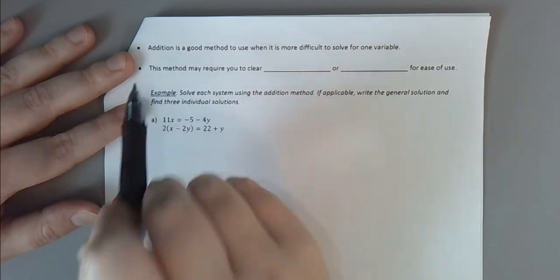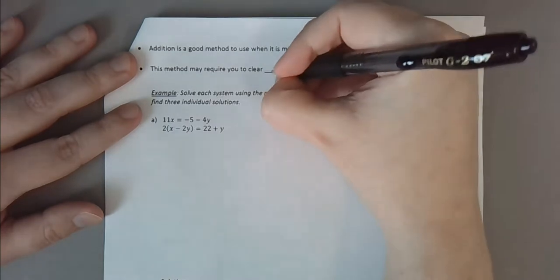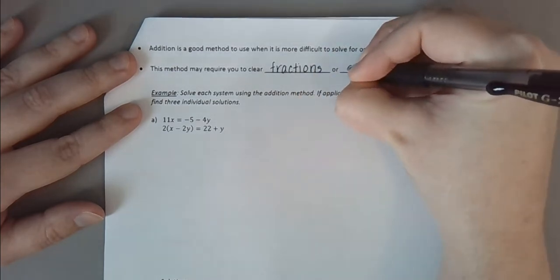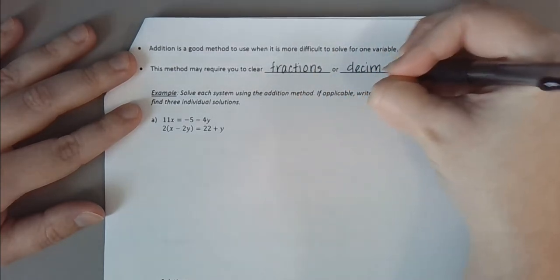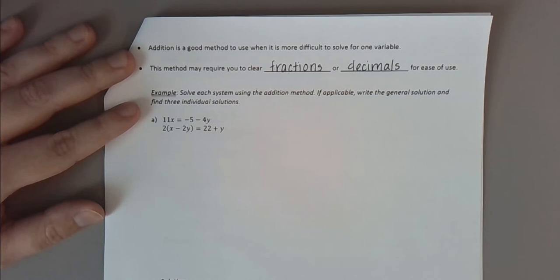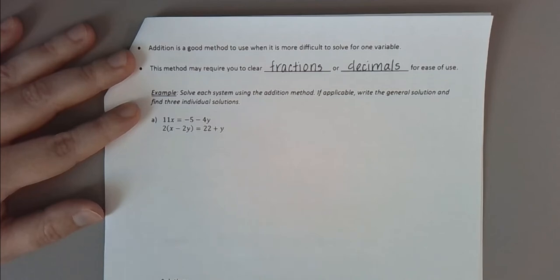One thing to keep in mind: using the addition method well may require you to clear fractions or decimals first. Getting matching coefficients is harder when the coefficients you start with are fractions or decimals. Ideally, get rid of any fractions or decimals before trying to find matching coefficients. We'll talk about how to eliminate those in a couple of examples.